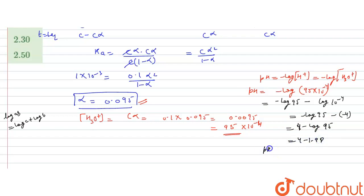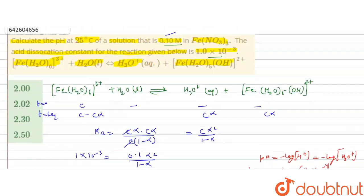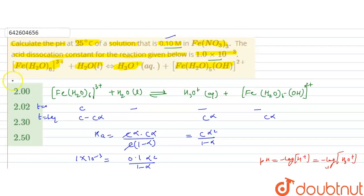So, pH of the solution resulting solution will be 2.02. So, pH of solution is 2.02. Correct answer to this question will be then B option 2.02. I hope you understood the solution. Thank you.